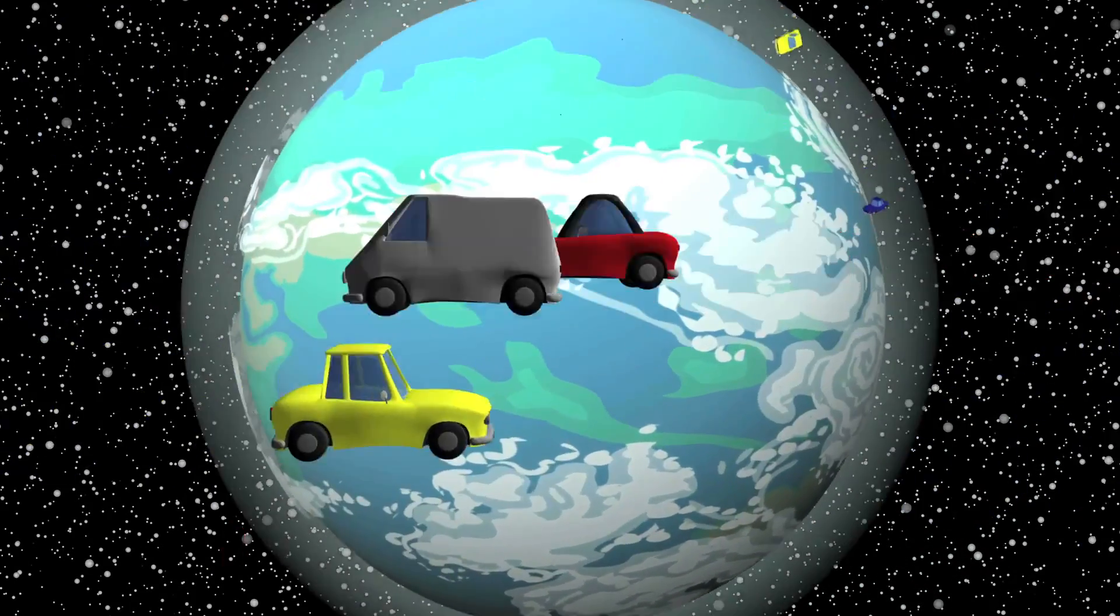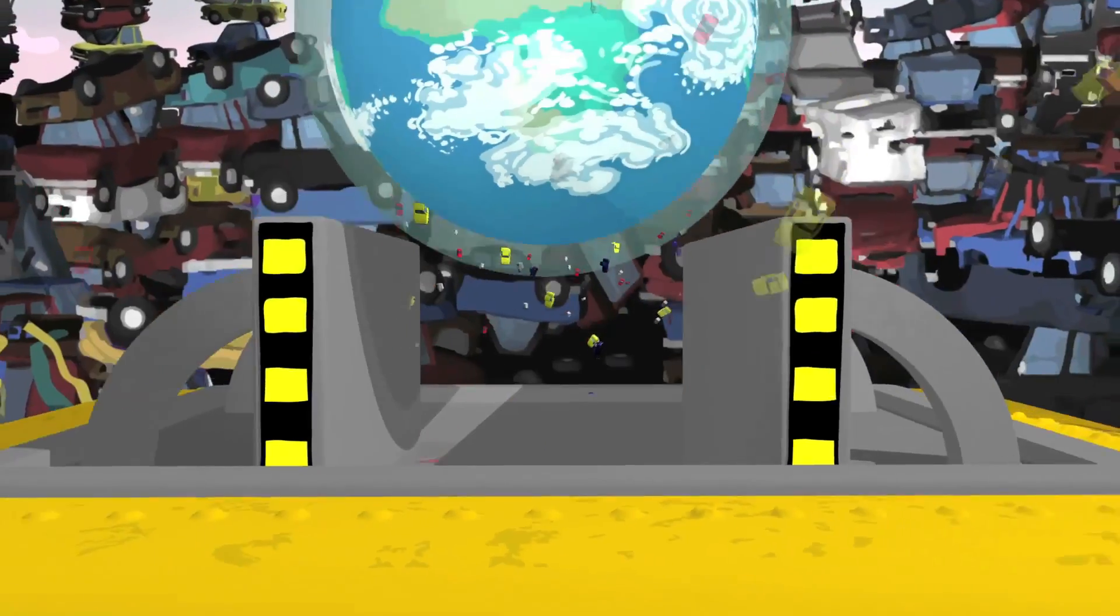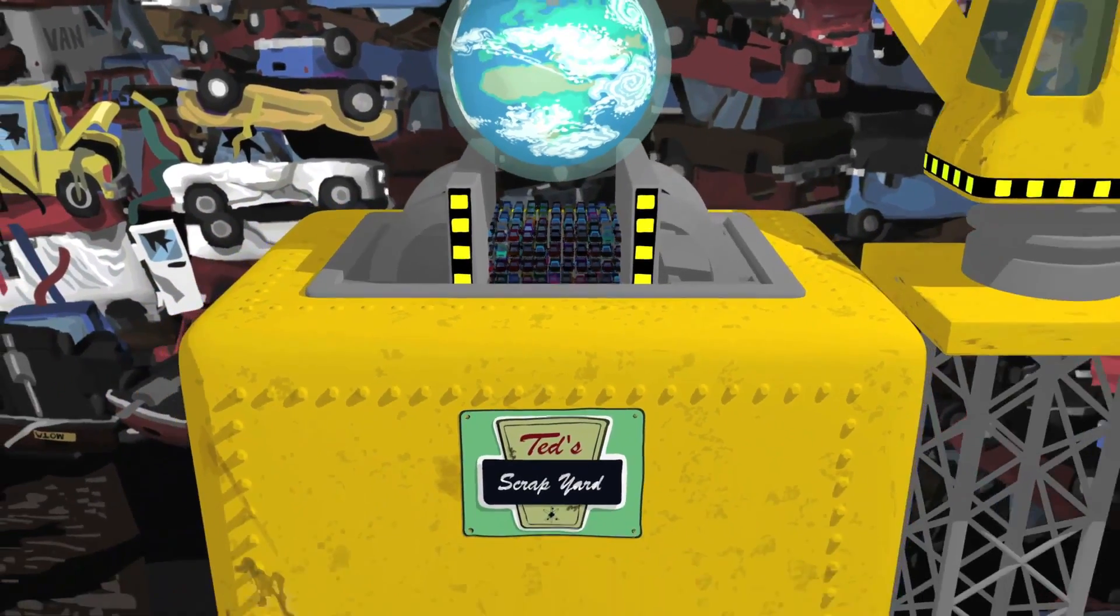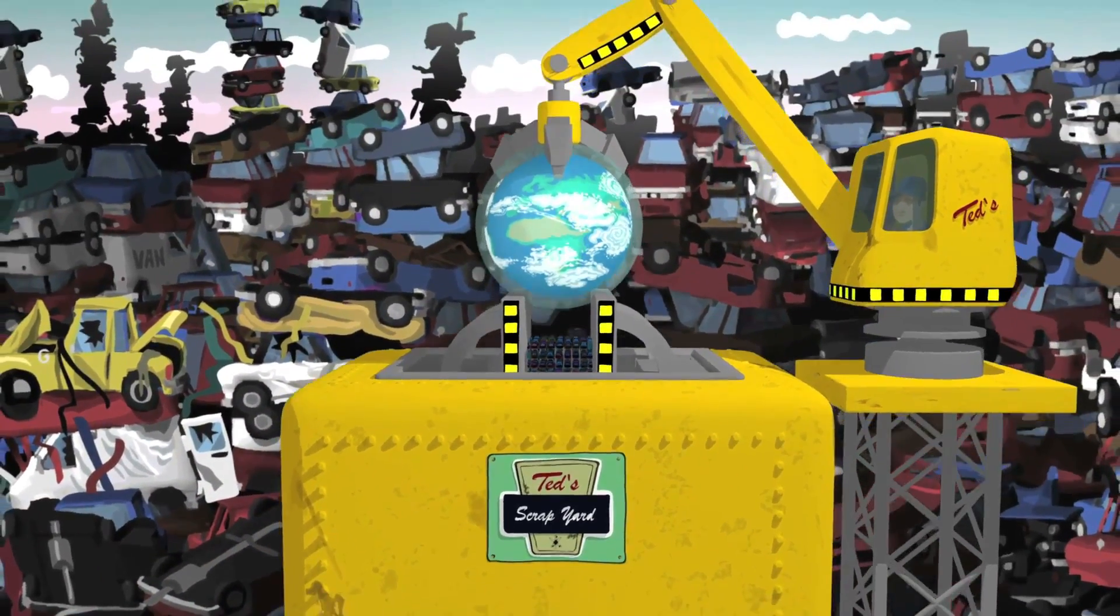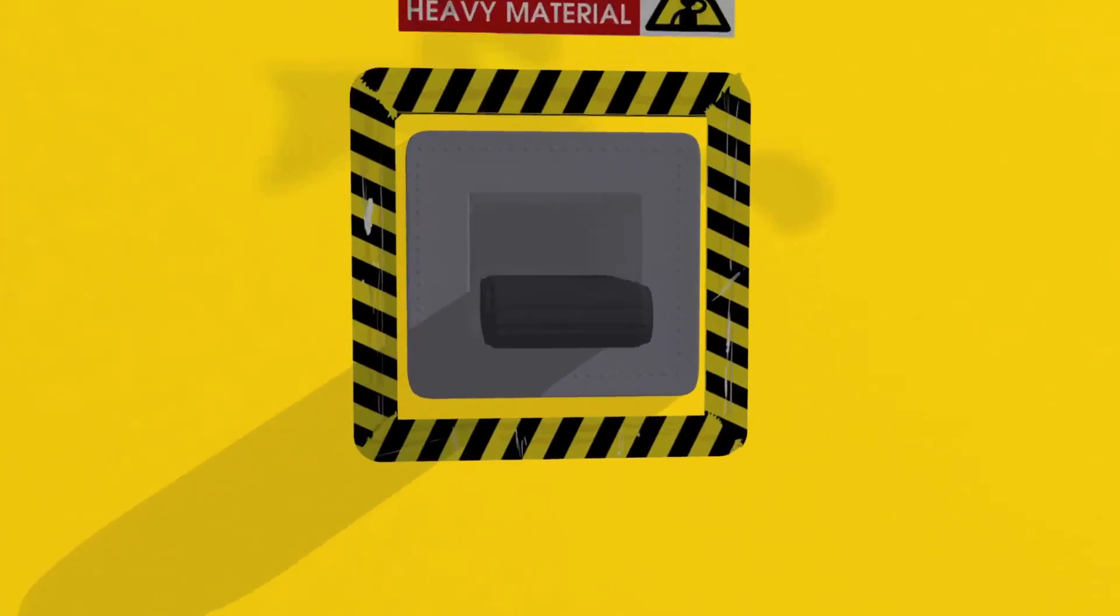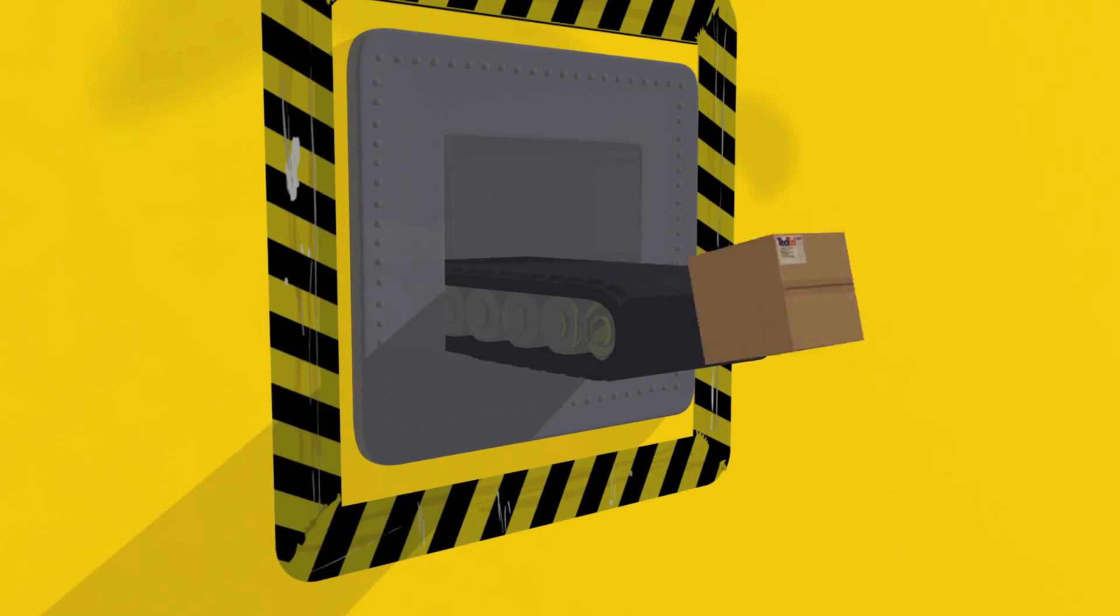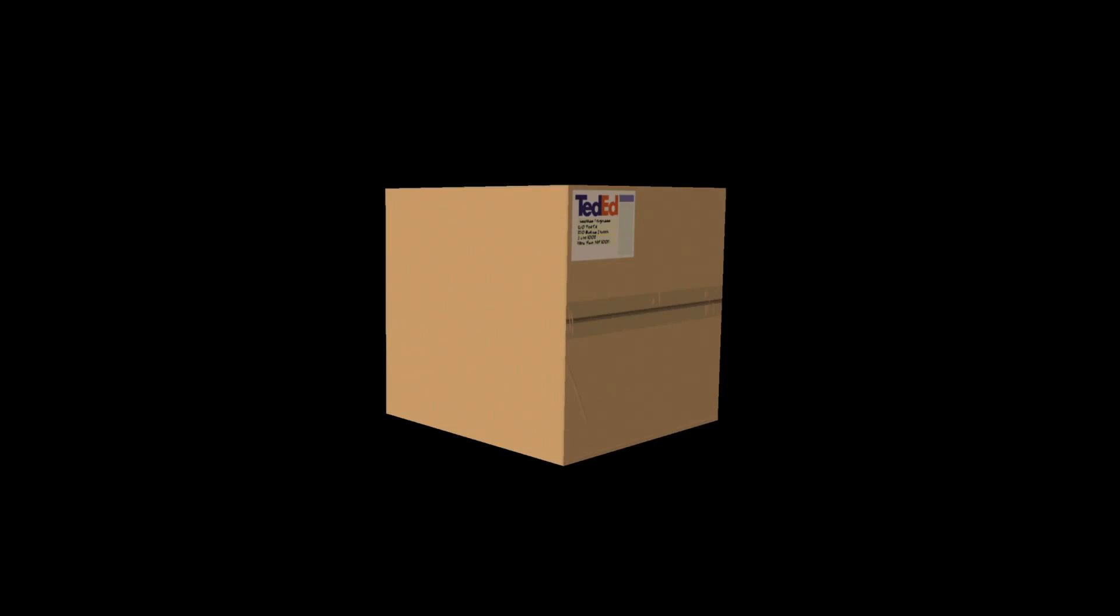So if everyone on Earth owned their own car, and they don't, and we put all of those cars into your box, that would be about the density of a nucleus. So I'm saying that if you took every car in the world and put it into your one foot box, it would have the density of one nucleus.